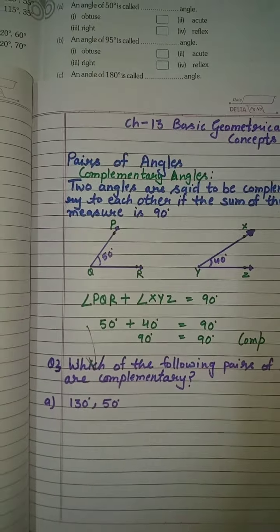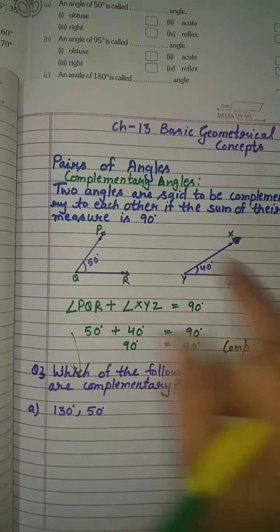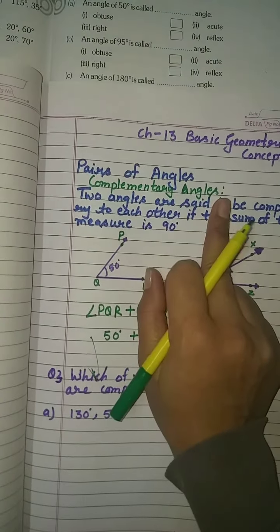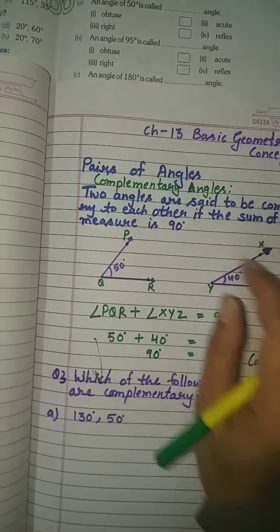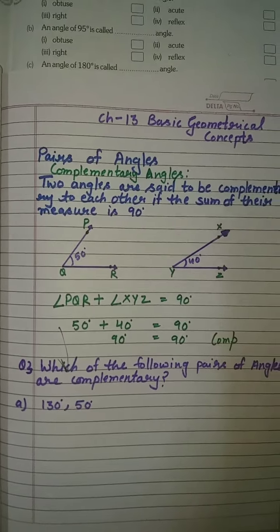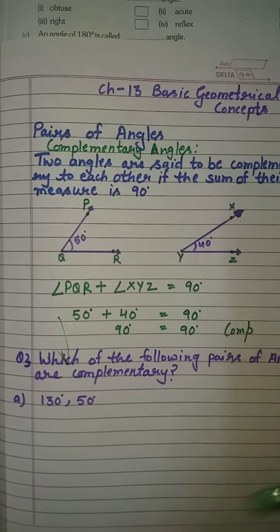There are two types of pair of angles: complementary angles and supplementary angles. Today we will do complementary angles.